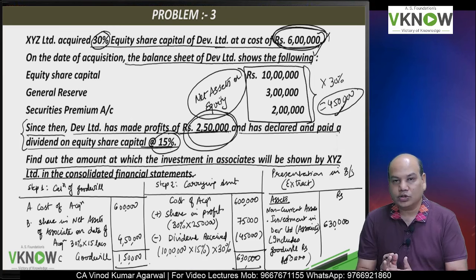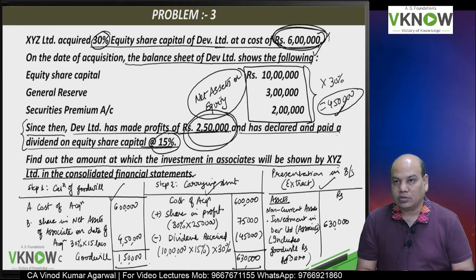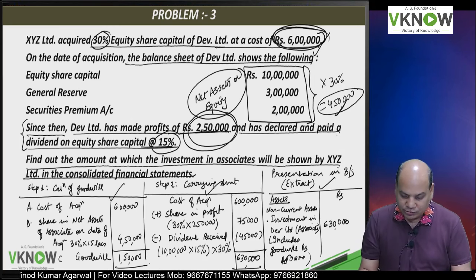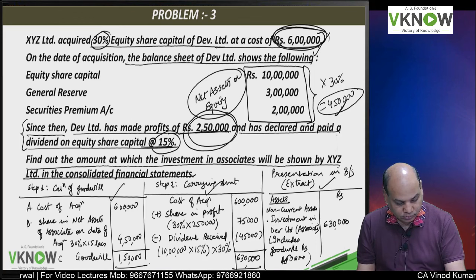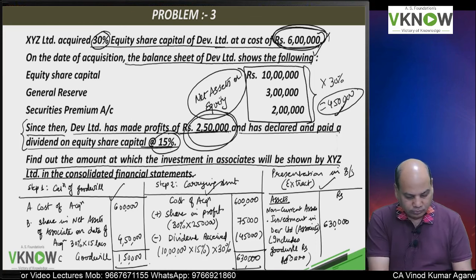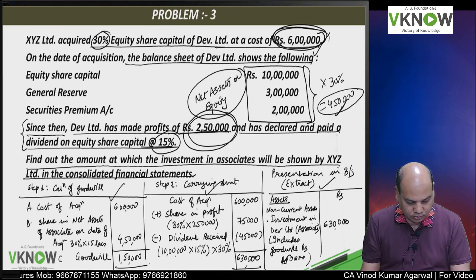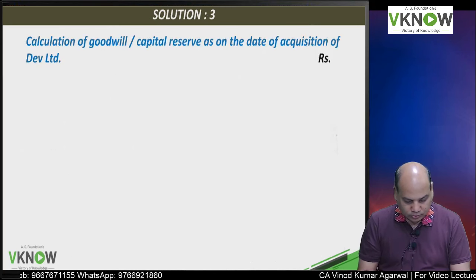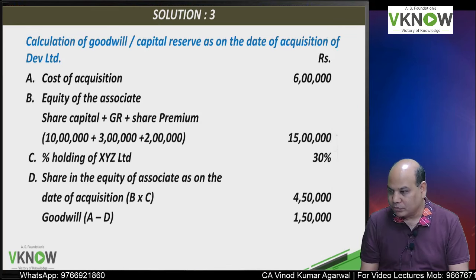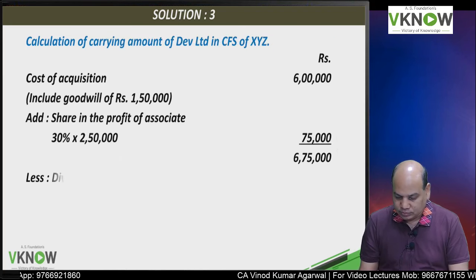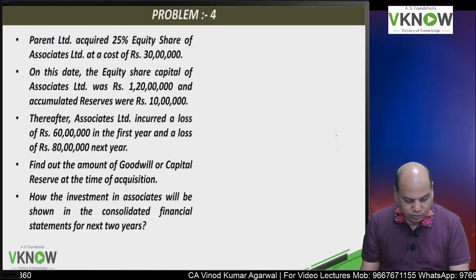The student should present the answer in the exam by first computing goodwill, then the carrying amount, and then how the investment will appear in the balance sheet. The institute answer has been presented the same way — they computed goodwill, then the carrying amount 6 lakh 30,000. Now we will go to question number 4.